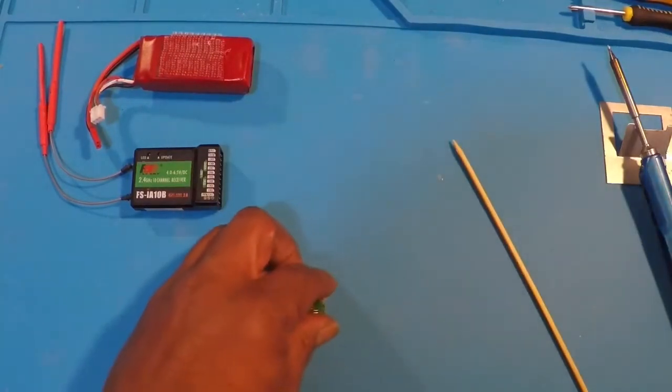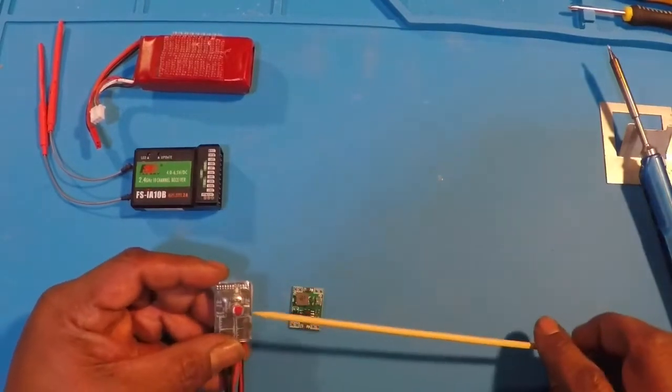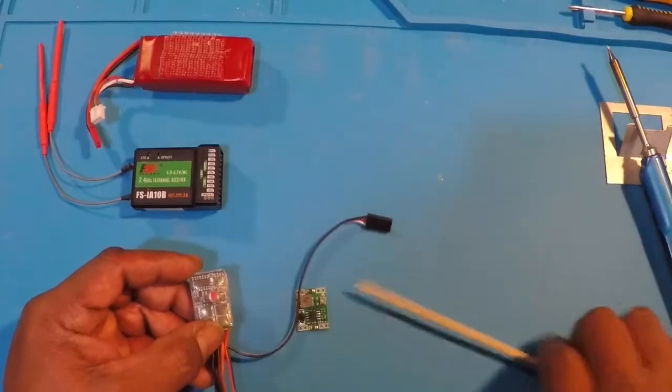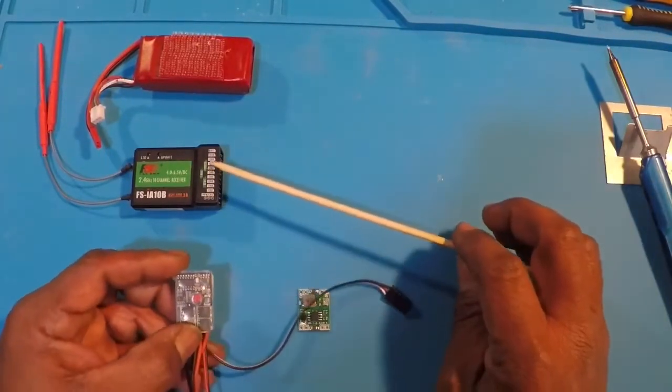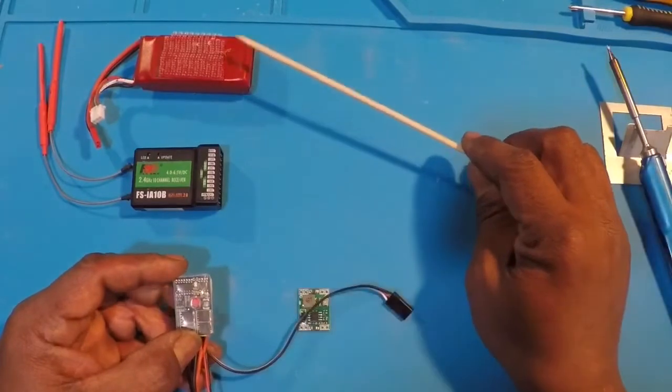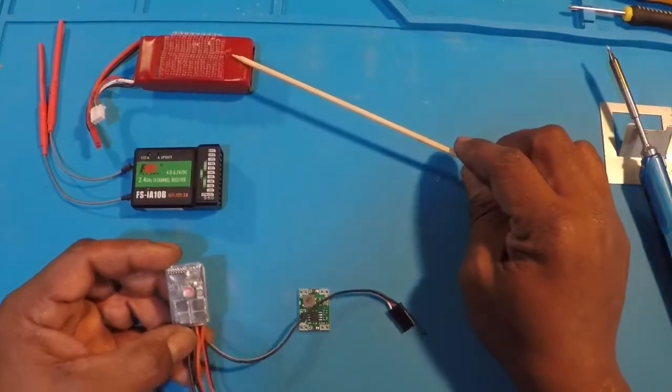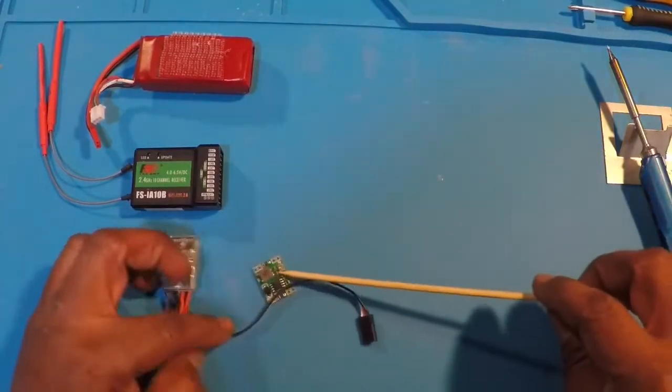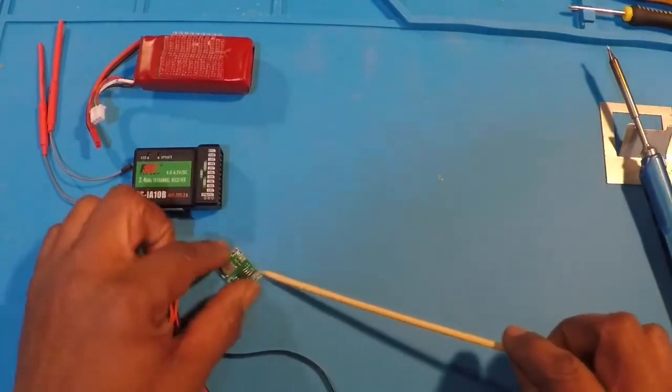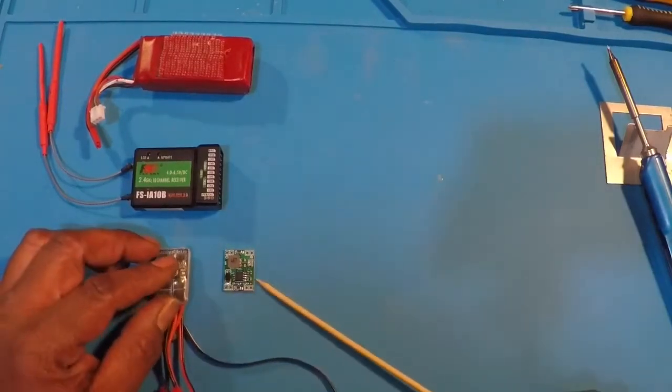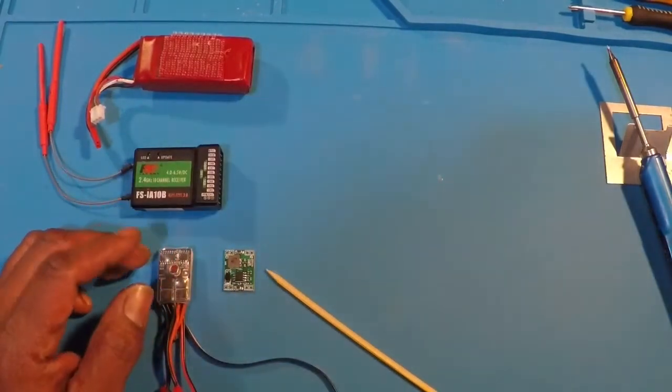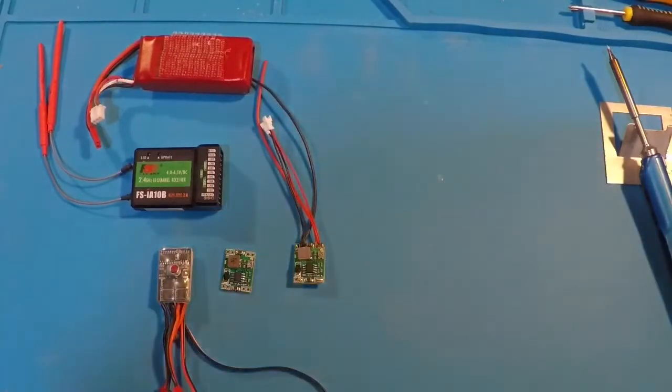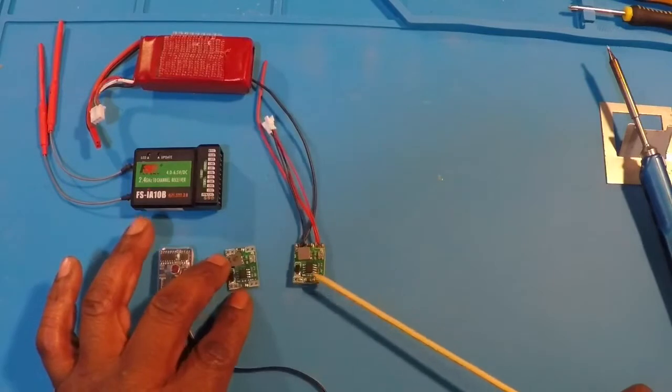So in our case, what we're using it for is to make a BEC or battery elimination circuit to provide power to our receiver. Because we're going to need less than the 7.4 volts that our primary power is going to put out. So we're going to make some modifications to our ESC in order to facilitate this. Now I'm going to spare you the gory details of watching me solder items and I'm just going to show you this harness in different phases.